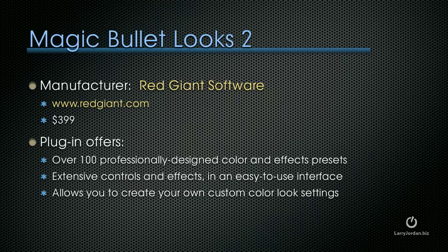Red Giant has come back with another one called Magic Bullet Looks 2. This is a $400 plug-in that offers over a hundred professionally designed color and effects presets. But its real strength is in providing extensive controls and effects in an easy-to-use interface that allows you to create your own custom color look settings. There's stuff we can do in Magic Bullet that we can't begin to do inside Final Cut Pro 10.